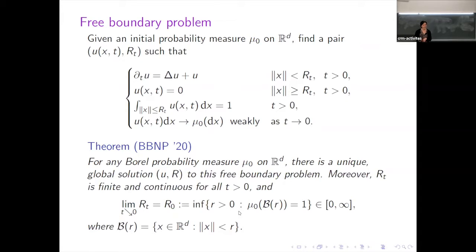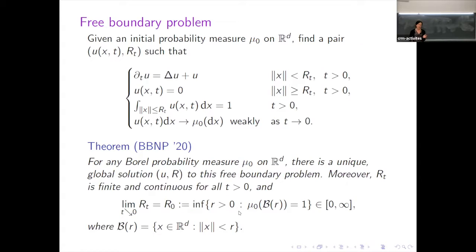Question from the audience: Why is the evolution so isotropic — the free boundary is just a sphere — even if there's no symmetry in the initial condition? Answer: It's because the definition of the particle system is isotropic — you're always killing the one furthest from the origin in terms of Euclidean distance. The solution is not necessarily symmetric because the initial condition isn't symmetric, but the boundary is.